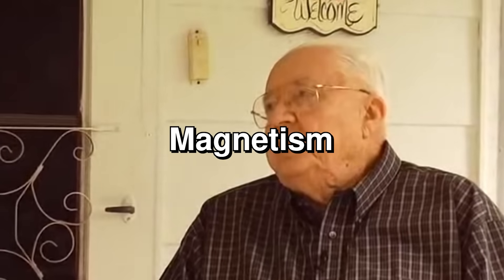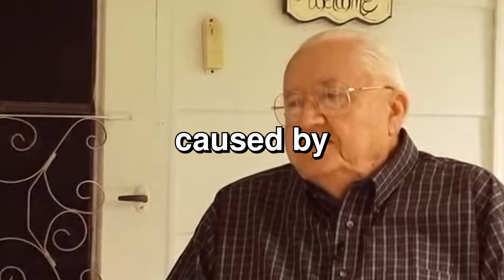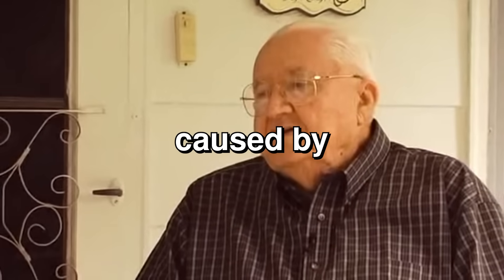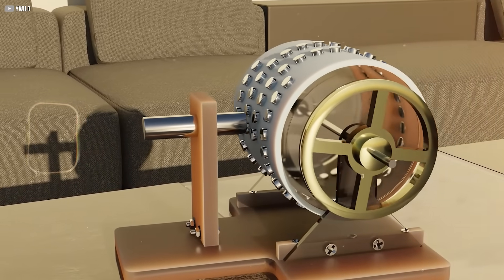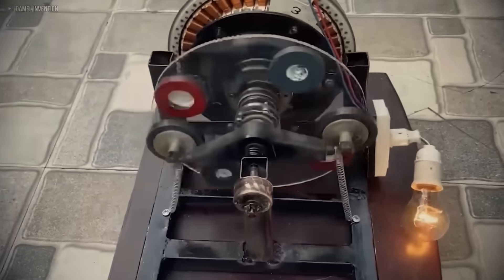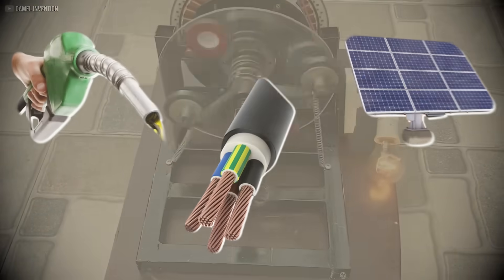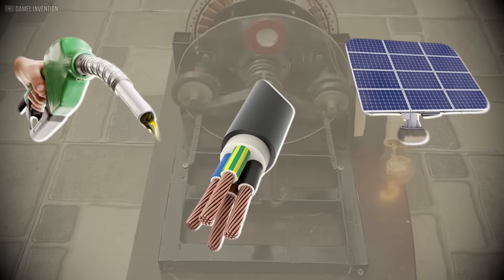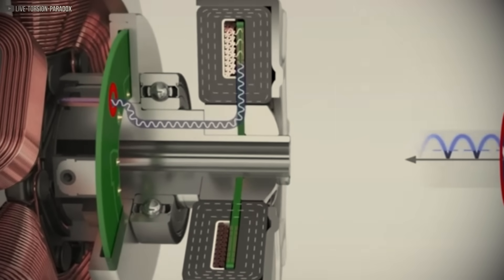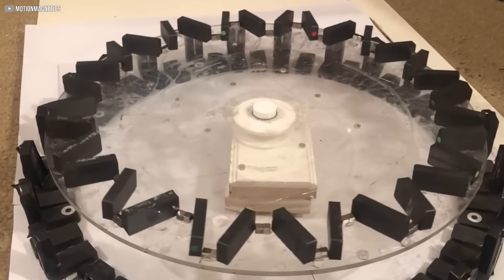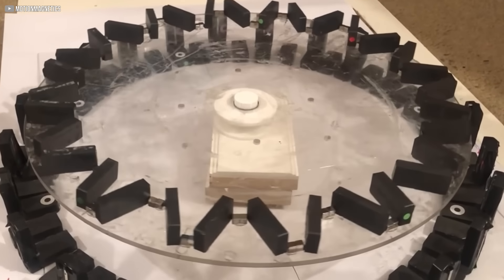Magnetism was caused by the movement of an electron. This was never supposed to be possible. A machine that runs forever without fuel, wires, or even sunlight. Just magnets. For decades, the idea was dismissed, ridiculed, and buried. But it was real.